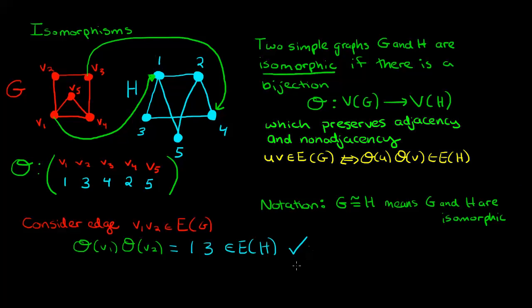So that's good, we checked that adjacency was preserved for this particular edge. Now you would have to go through and check every single edge and make sure that adjacency is preserved, but indeed it works out. You can run the same process on all of the edges and you'll see adjacency is always preserved here. So now let's take a look at this map θ and figure out why it is a bijection.